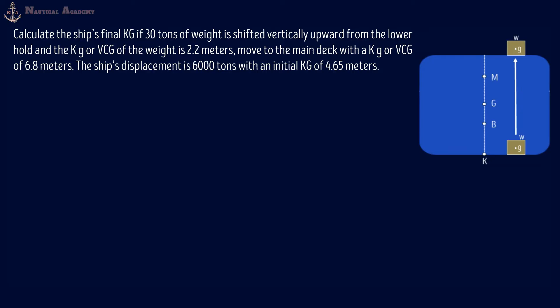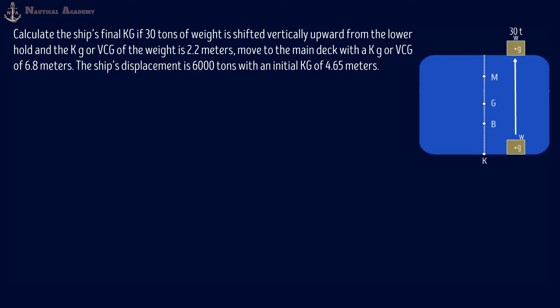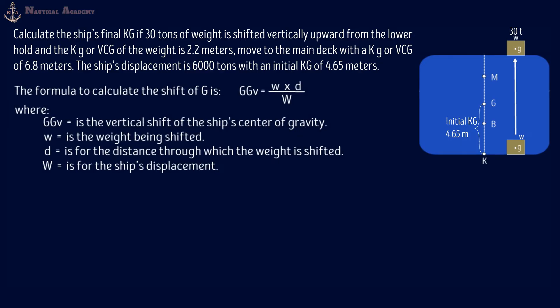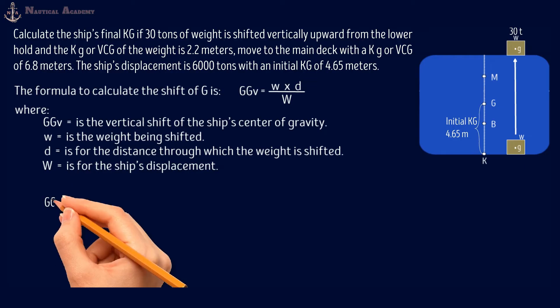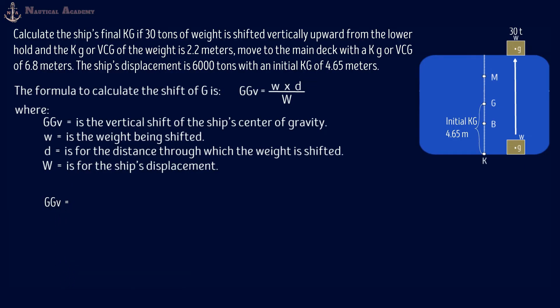Calculate the ship's final KG if 30 tons of weight is shifted vertically upward from the lower hold, where the KG or VCG of the weight is 2.2 meters, moved to the main deck with a KG or VCG of 6.8 meters. The ship's displacement is 6,000 tons with an initial KG of 4.65 meters. The first step is to find the vertical shift of the ship's center of gravity or GGV, in which the formula is weight times distance divided by the ship's displacement. For the weight, that is the weight of the cargo being shifted, which is 30 tons. For the distance, let us check the illustrations first.